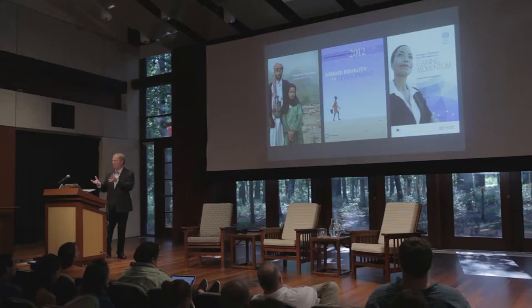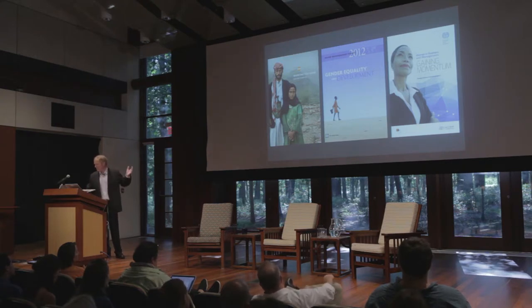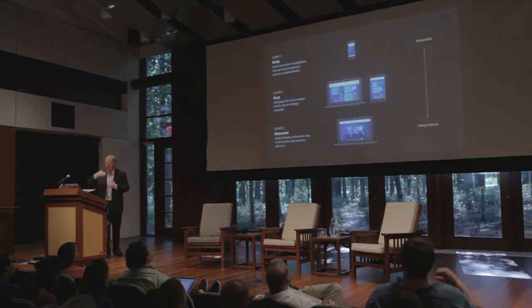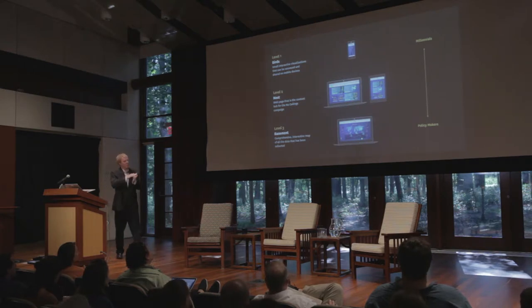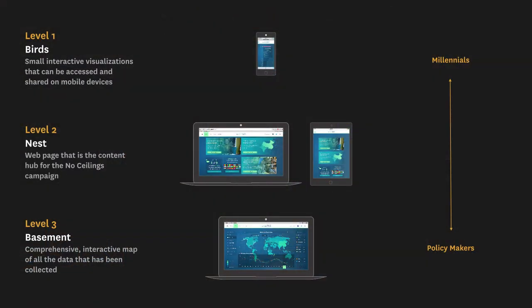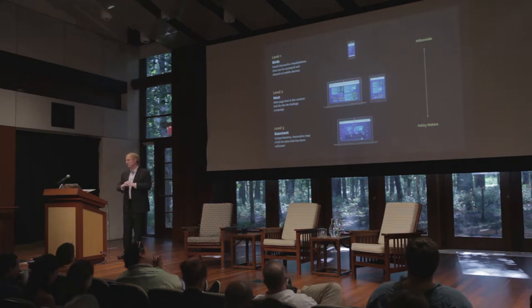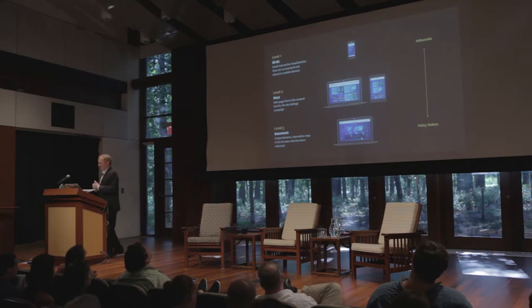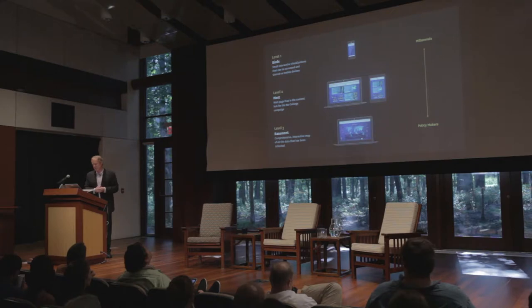Having found something, we'd go back to the original sources — reporting from the UN and the World Bank. We also figured out for these different stories what level they live at. We had things we called the birds, the nest, and the basement. The birds were small things to be shared on social platforms — they go out and live on their own. The nest is the site itself that we want to get people into to dig around and look at different things. The basement — it's a finished basement — is a refined version of that map where you can get access to all 850,000 data points and always get back to every last source.